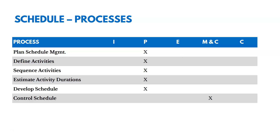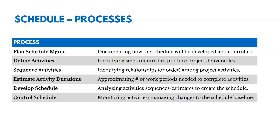There are six processes in this chapter — five are in planning, one's in monitoring and controlling. With Plan Schedule Management, we're documenting how the schedule is going to be developed and controlled: what estimating techniques we're going to use, who we're going to have involved, that sort of thing.